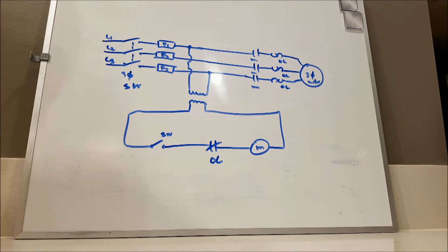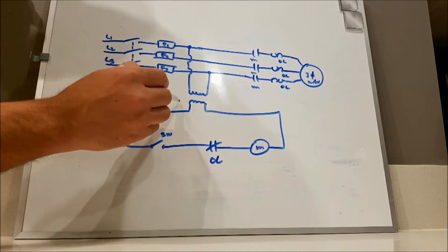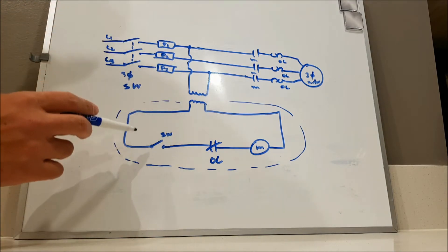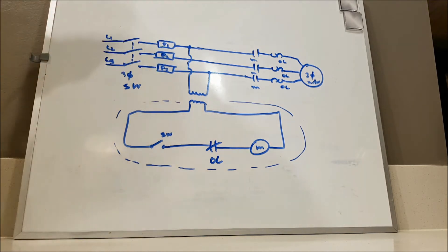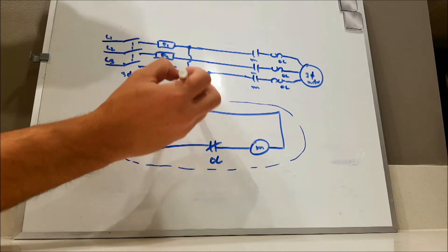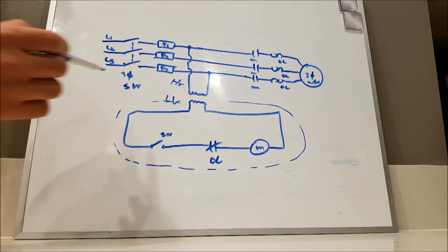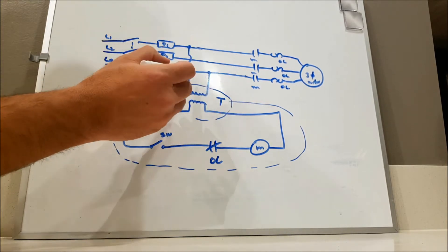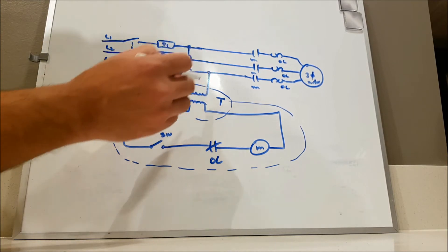This will be a quick video on motor control. What we usually need in order to control a three-phase motor is what we call the control circuit. A control circuit is this part of the system with a lower voltage — we use low voltage on this side to control a higher voltage on the other side. We do this by using a transformer.